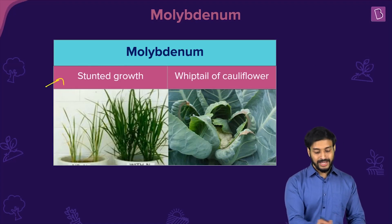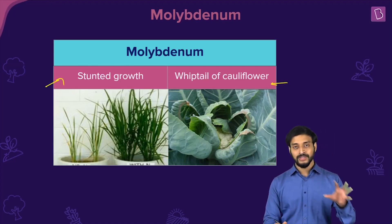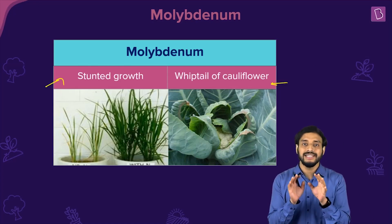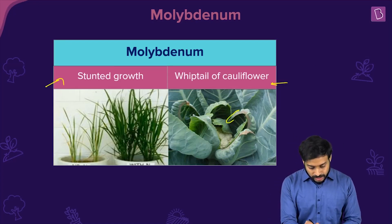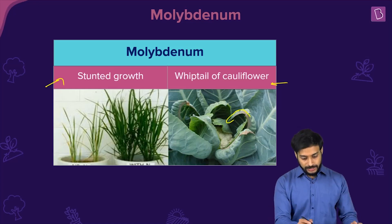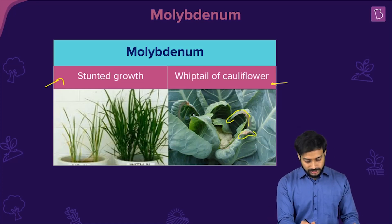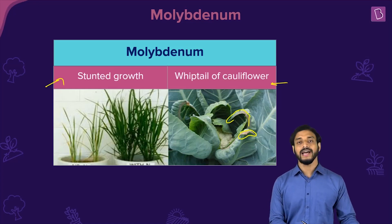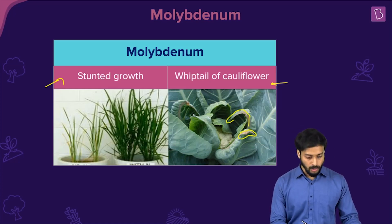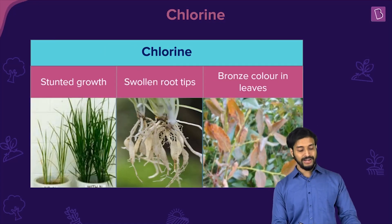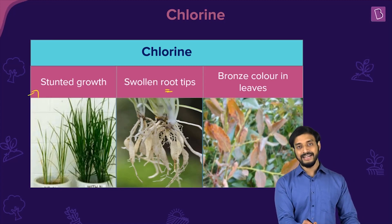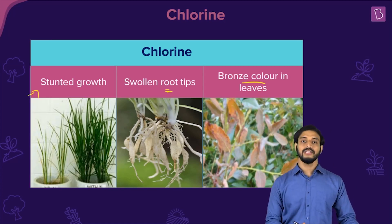Molybdenum deficiency causes stunted growth and whiptail of cauliflower — where the leaf surface area reduces, edges curl, and brownish discoloration appears. Chlorine deficiency causes stunted growth, swollen root tips, and bronze-colored leaf tips.